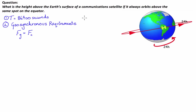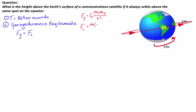Simply put, the gravitational force FG is equal to the universal gravitational constant multiplied by the mass of the first object times the mass of the second object, divided by the square of the distance between each object's centre of mass or the radius. For our centripetal force, that's equal to the mass of the object in circular motion times the velocity squared divided by the radius of the arc of the circle.